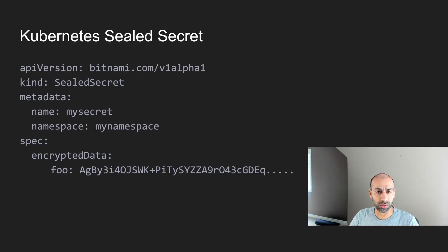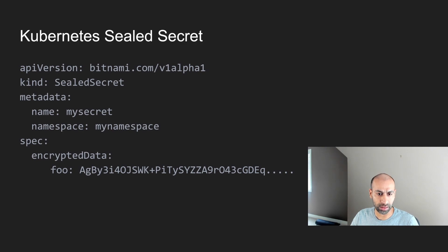Sealed secrets is a Kubernetes resource which looks something like this. The kind is a sealed secret and we have encrypted data which is a secret. This is the key and this is the encrypted value.